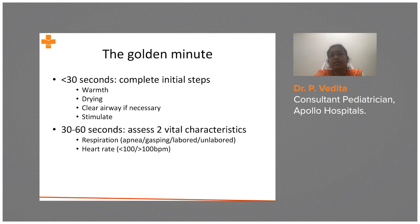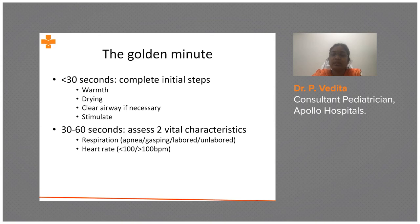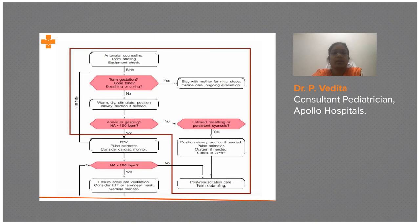Within 30 to 60 seconds, assess two vital parameters: respiration and heart rate. Check whether the baby is apneic or gasping. If not, check whether respiration is labored or there is persistent cyanosis, and whether the heart rate is less than 100 or more than 100. After stimulating the baby, positioning the airway in sniffing position, and suctioning, we assess for apnea or gasping, heart rate, and labored breathing or persistent cyanosis.